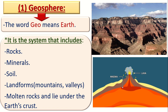On the Earth's surface we have solid rocks. Under the Earth's surface we have minerals, like metals. Soil is also part of the geosphere. Landforms like mountains are part of the geosphere because they come from the ground. Valleys are also part of the geosphere, and molten rocks under the Earth's crust are part of the geosphere too.